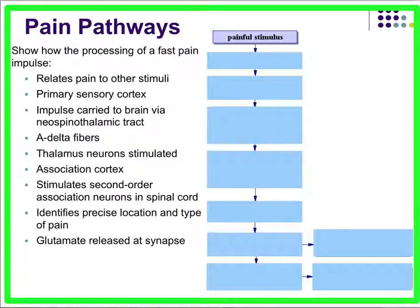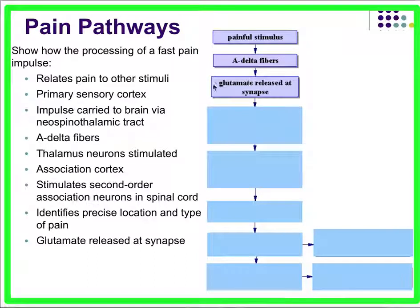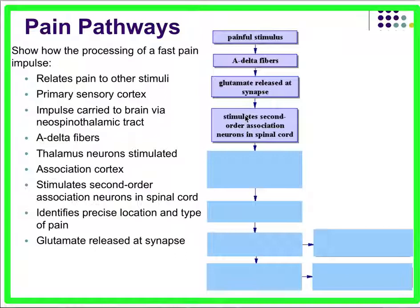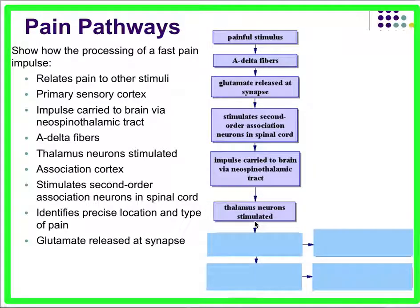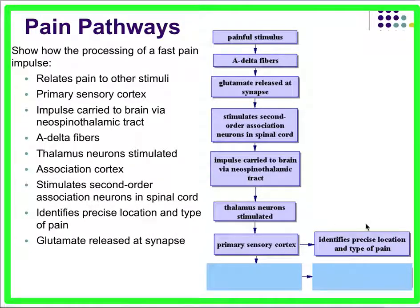To conclude with a summary flowchart of the pain pathway: a painful stimulus activates A delta fibers — our fast pain fibers. Glutamate is released at the synapse, stimulating second-order neurons in the spinal cord. The second-order neurons send the impulse to the brain via the neospinothalamic tract, then to the thalamus, which sends it to the primary somatosensory cortex. This allows us to identify the precise location and type of pain. The association cortex can also be activated, allowing us to relate the pain to other stimuli.